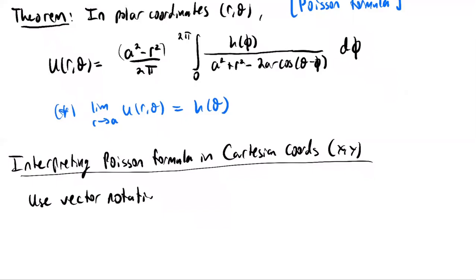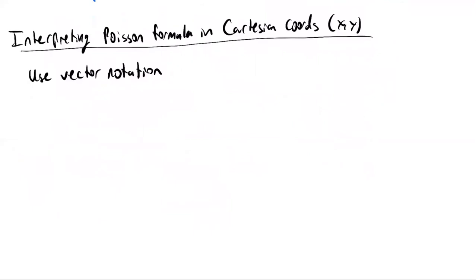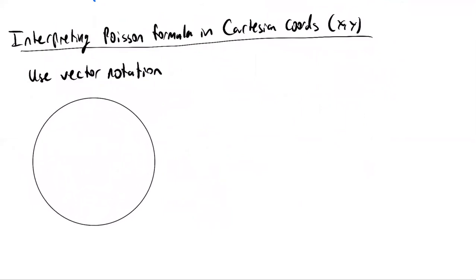Let's copy over the domain again: a circle of radius a centered at the origin. We're going to let the vector x, which we can think of as the point (x, y), be a point in the interior of the domain. We'll also let x prime be a vector on the boundary. What we want to do is rewrite the Poisson formula in terms of x and x prime.